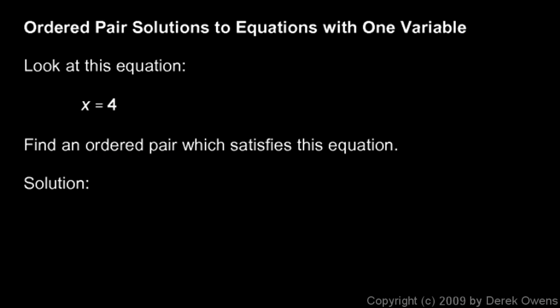Okay, two values, an ordered pair which satisfies this equation. Well look at this, what if I had this ordered pair, 4 comma 2? Well, this is x is 4 and y is 2.